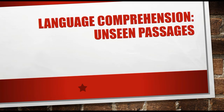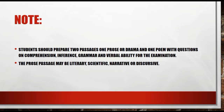In the English language paper there is a section called language comprehension in which you have unseen passages. Two types of passages can come: one is prose or drama, and another is poem. So you have to prepare for both of these — prose, drama, or poem.